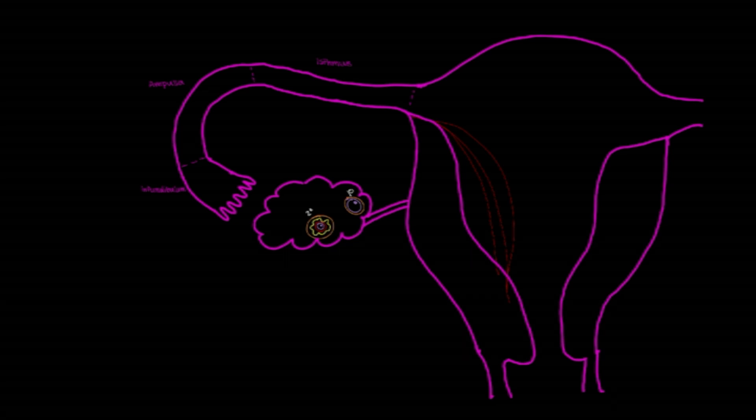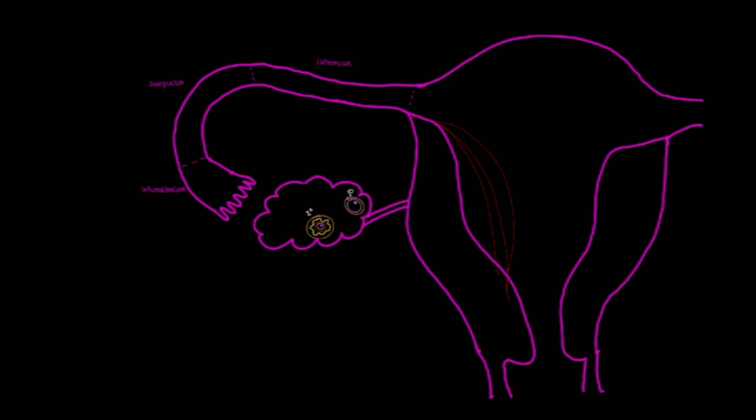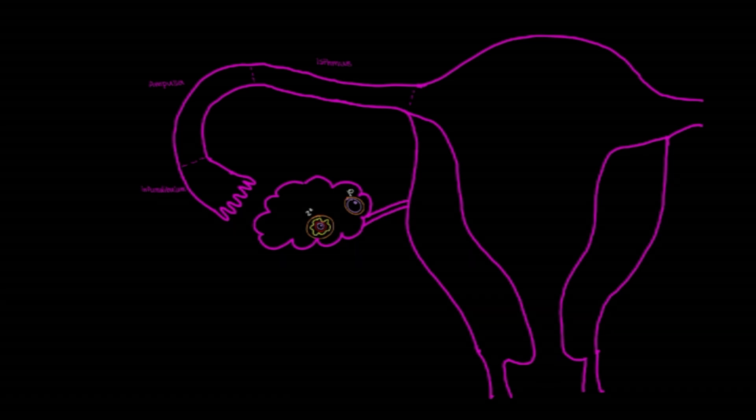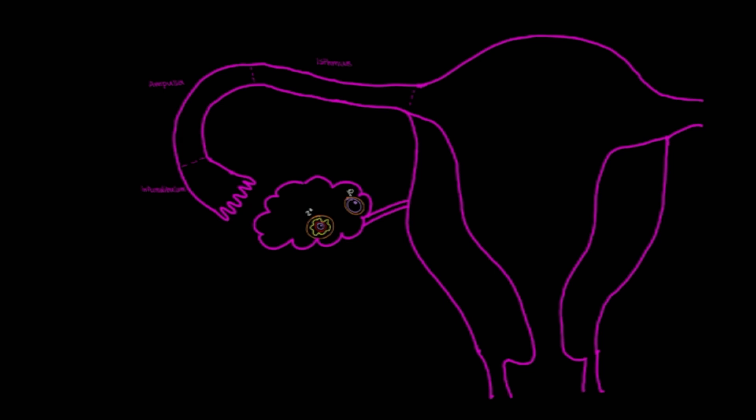However, if implantation does not occur, then the endometrium is shed during menstruation, and that is what occurs when a woman is on her period, is that endometrial lining is being shed because no implantation has occurred.